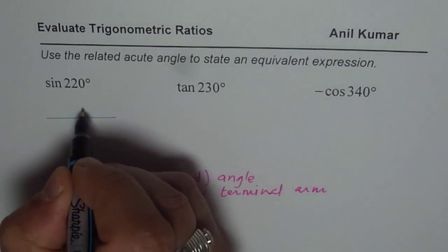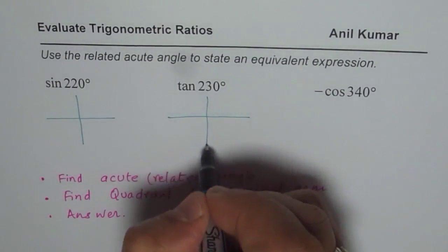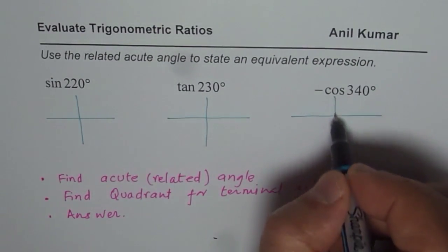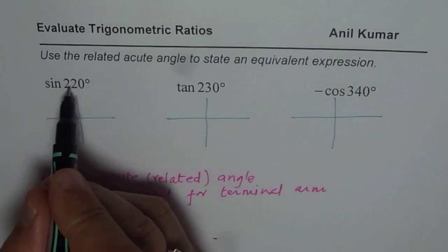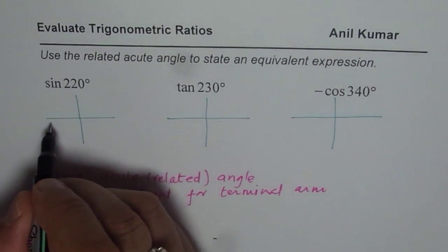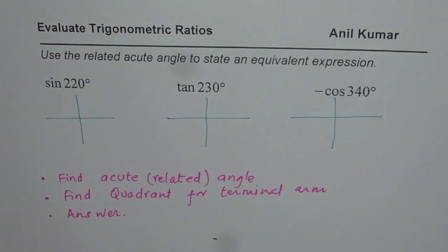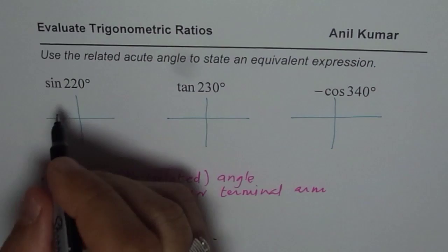So what we will do is we will sketch them one by one to find the related acute angle. And then we will proceed forward. Sine of 220, it is how much more than 180? 220 minus 180.